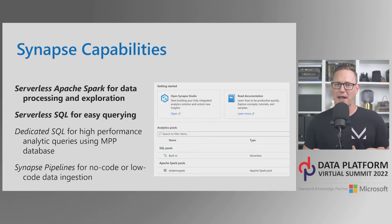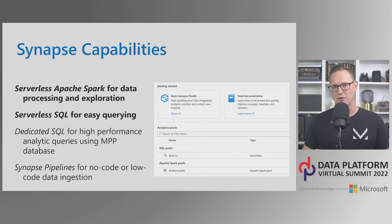Dedicated SQL is for when you need extra performance — you need to load data to a purpose-built massive parallel processing database. You probably want more than a terabyte of data to justify Dedicated SQL. It's similar to SQL Server but has some overlap with things like Redshift or Google BigQuery. You're going to pay more and do more thinking about how you organize and structure your data. Synapse Pipelines is really meant for no-code or low-code data ingestion.